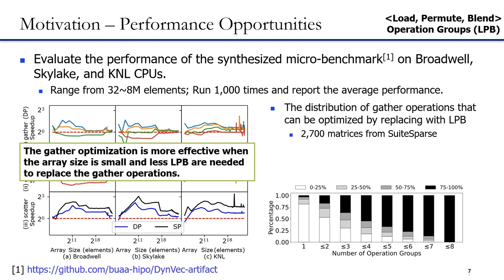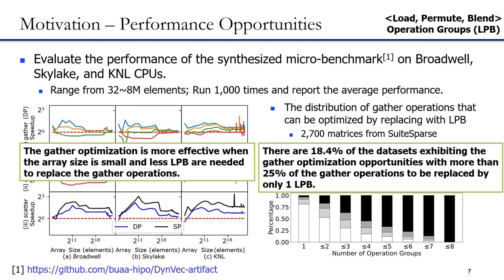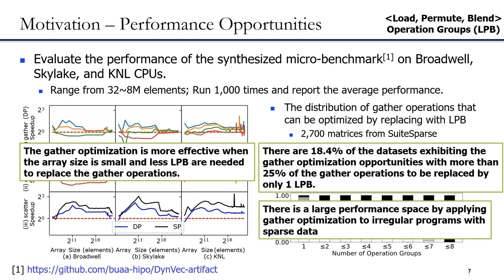Fortunately, most sparse data exhibit irregular patterns to some extent. The bar figure in the slide shows the distribution of gather operations on sparse datasets that can be optimized by replacing with LPP operation groups. The x-axis indicates the number of LPP for a replacement, and the y-axis indicates the percentage of datasets. There are 18.4% of datasets exhibiting gather optimization opportunities with more than 25% of gather operations to be replaced by only one LPP. Therefore, there is a large performance opportunity by applying gather optimization to irregular programs with sparse data.